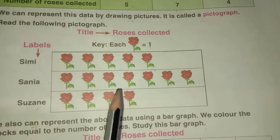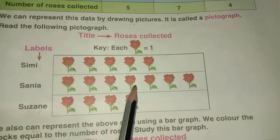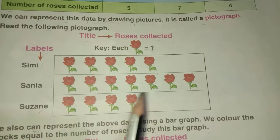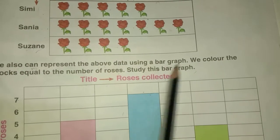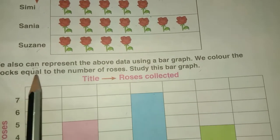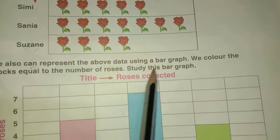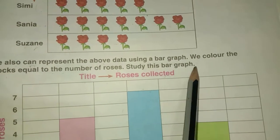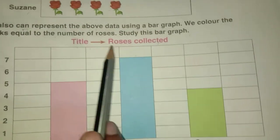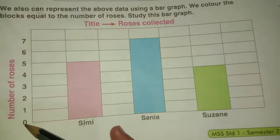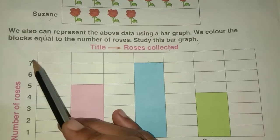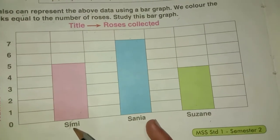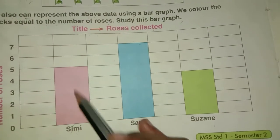We can also represent the above data using a bar graph. We color the blocks equal to the number of roses. The title is 'Roses Collected.' The vertical axis shows the number of roses from zero to seven.